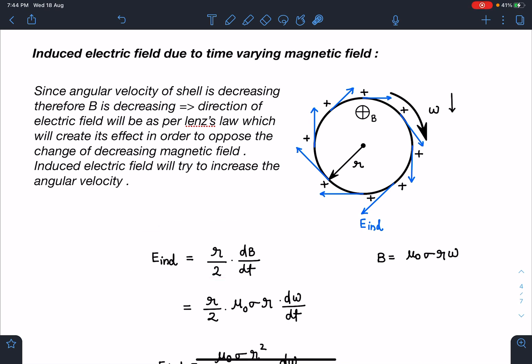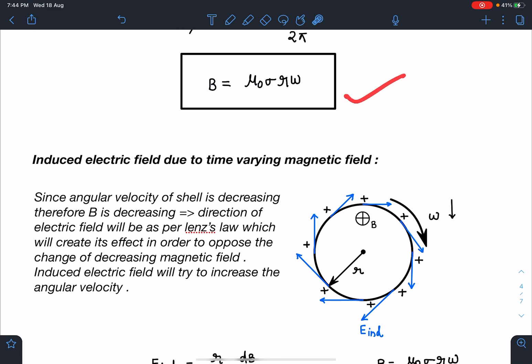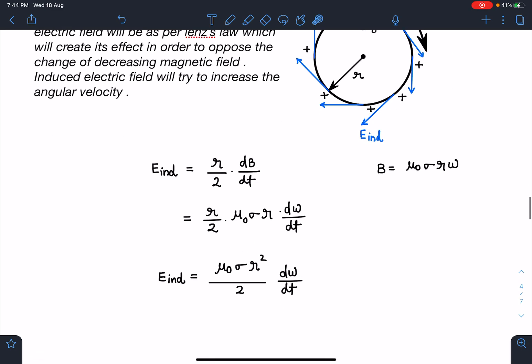Directly we can use r/2·dB/dt. Now I'm going to substitute the value of B from this equation. If I substitute this, I am going to get the induced electric field as μ₀σr²/2·dω/dt. This itself is a small mains level problem, but together you can see how the strength of the problem is increasing, or the gravity of the situation is increasing.